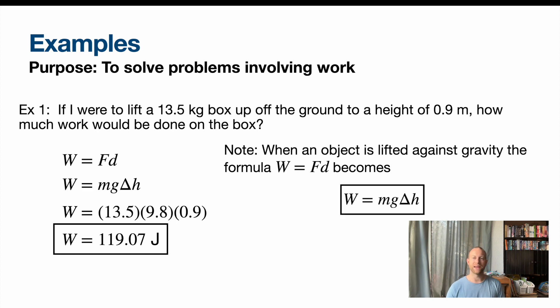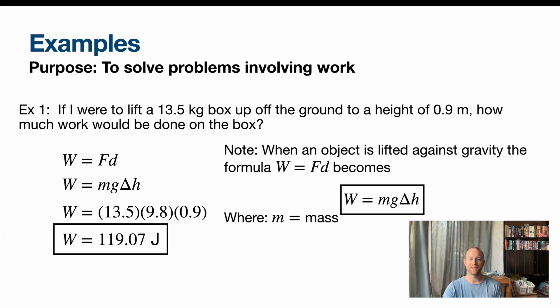Note, when an object is lifted against gravity, like we did in this one, you're just picking an object up, the formula work equals force times distance becomes mg delta H. We'll explain a little bit more about this in the next section. But for now, just a heads up that you can use this equation. And again, from this, m is mass, g is acceleration due to gravity, you know that value, we've done that a few times. Delta H is change in height.